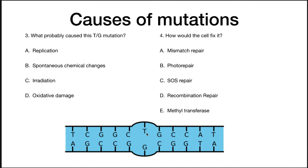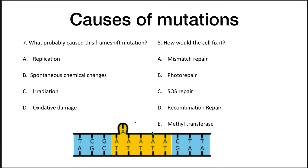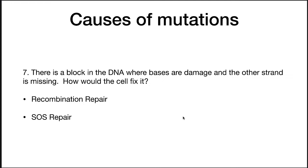What probably caused this frameshift mutation? You've put in an extra A as you've copied the DNA. How would the cell fix this? The correct answer is, again, methyl mismatch repair. This points something out — in many cases, if you have incorrect bases in places like this, the best way to fix them is mismatch repair. SOS repair is a last-ditch effort. Photo repair fixes pyrimidine dimers. Recombination repair is for more serious errors on one strand where there are a number of bases wrong. Finally, if there's a block in the DNA where bases are damaged on one strand and the other strand is missing, the cell would use SOS repair.